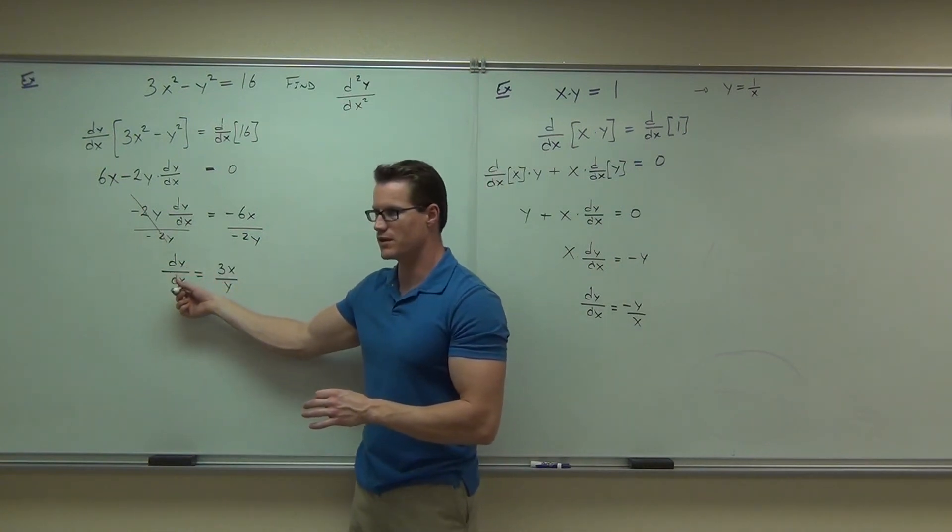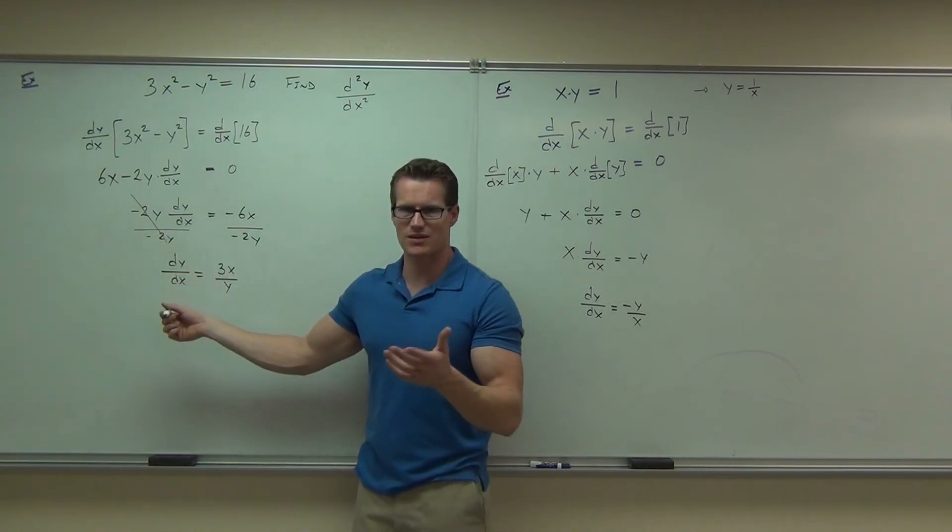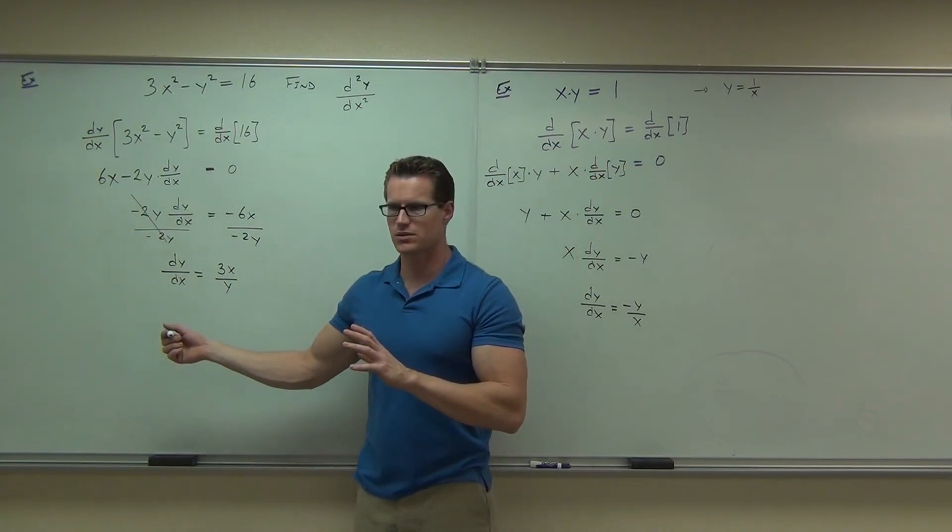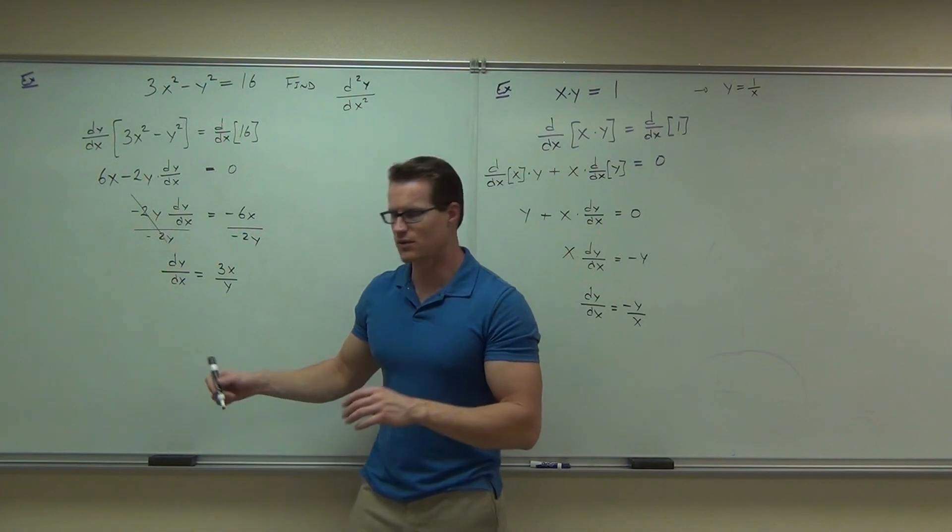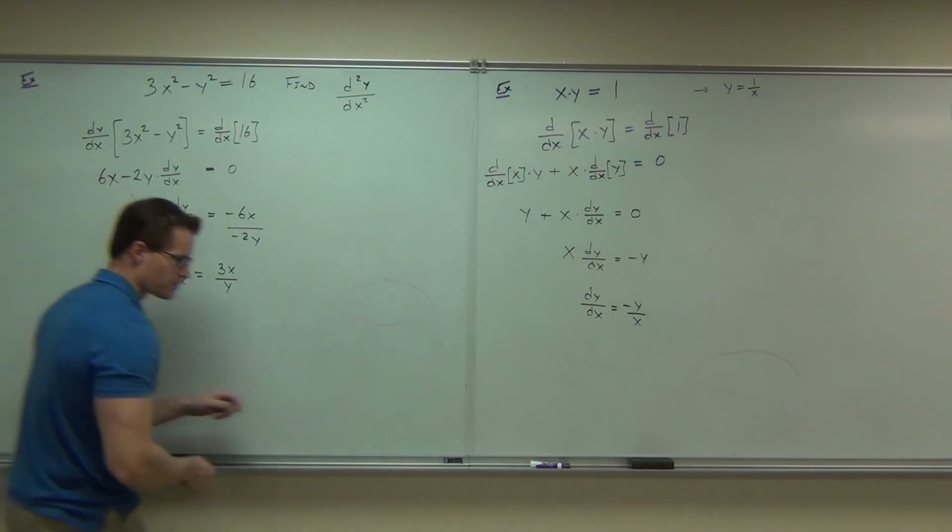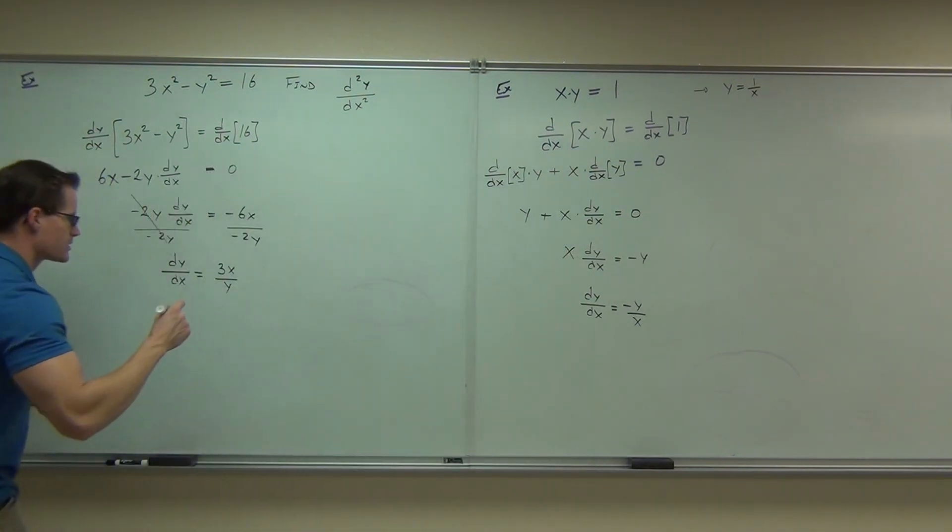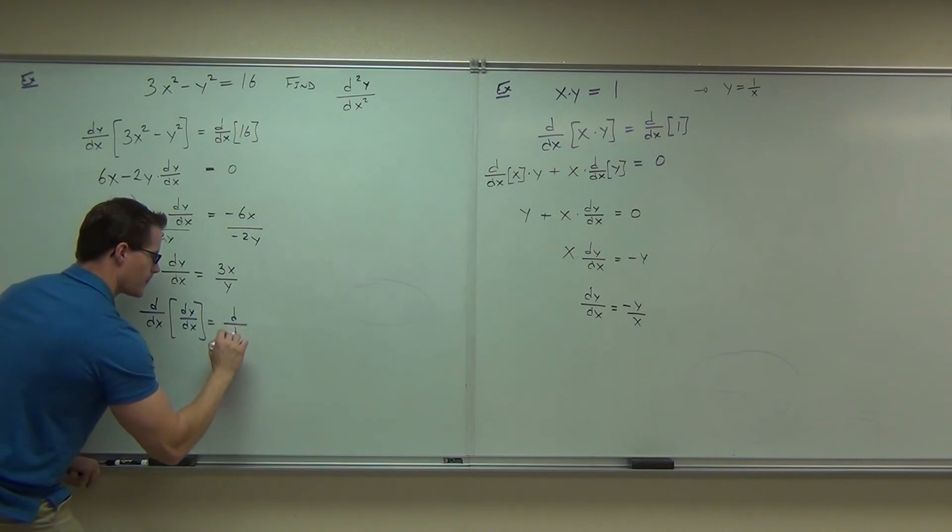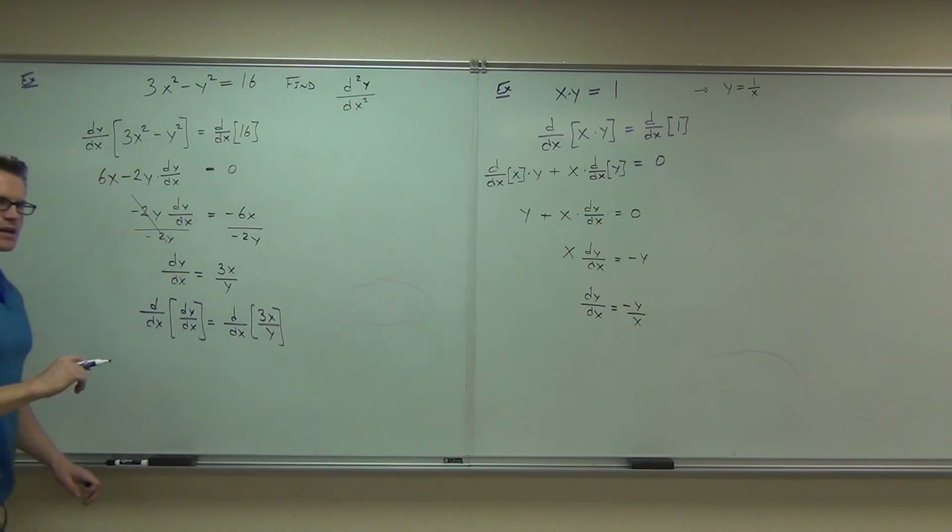The second derivative just says, hey, check this out. This is kind of neat. Why don't you just take a derivative of both sides? So, go ahead and do that. Can we take a derivative of both sides? Watch how to accomplish this. If we derive both sides, we get d/dx dy/dx equals d/dx 3x over y.